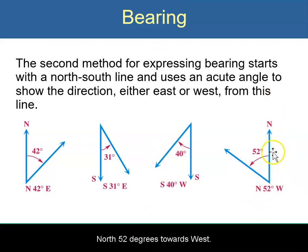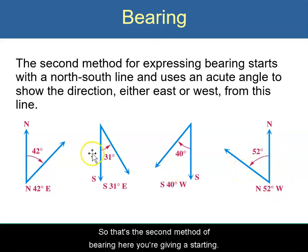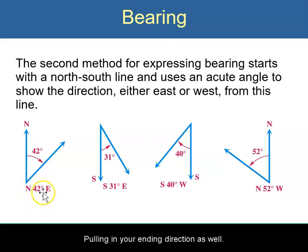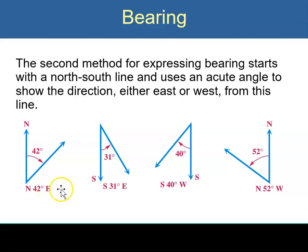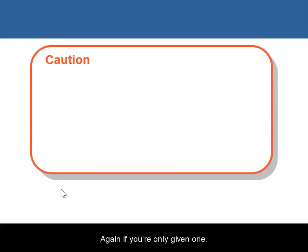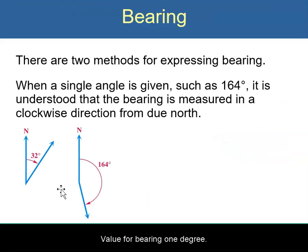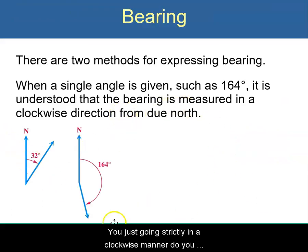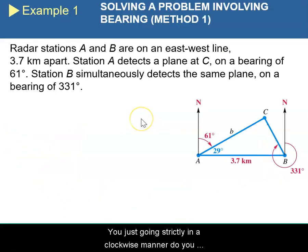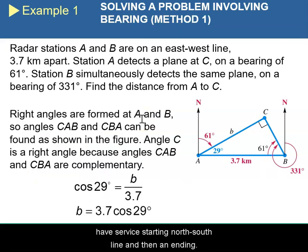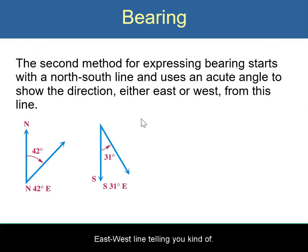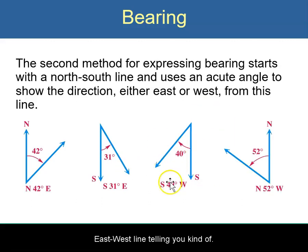North, 52 degrees towards west. That is the second method of bearing. Here, you're given a starting pole and then an ending direction as well, where your angle is going towards. If you're only given one value for bearing — one degree — you're just going strictly in a clockwise manner. If you have a starting north-south line and then an ending east-west line, it's telling you a map for where you need to start mapping these things out.